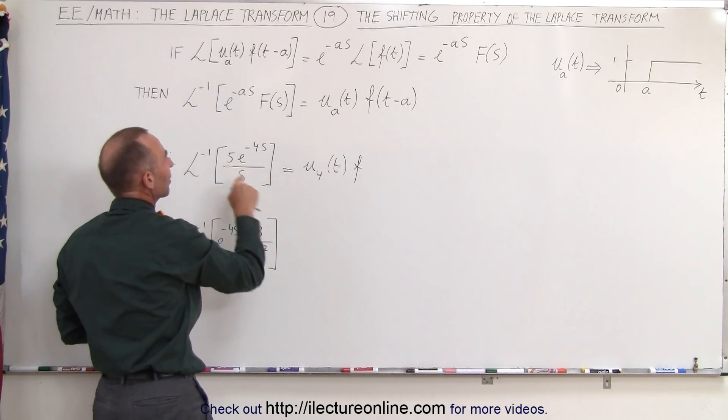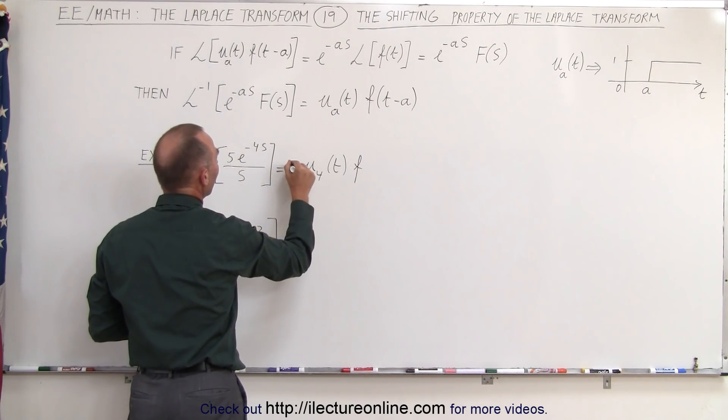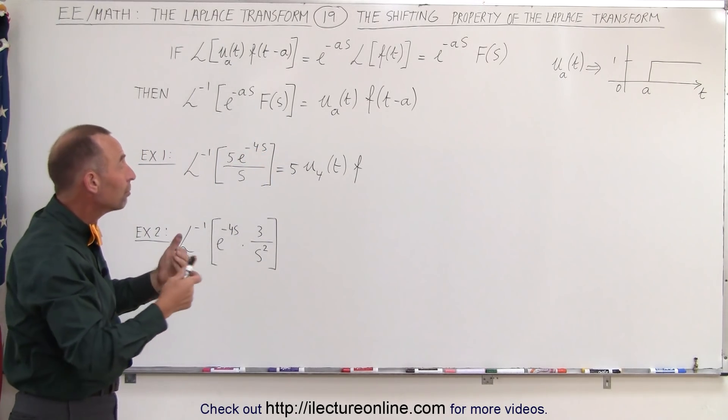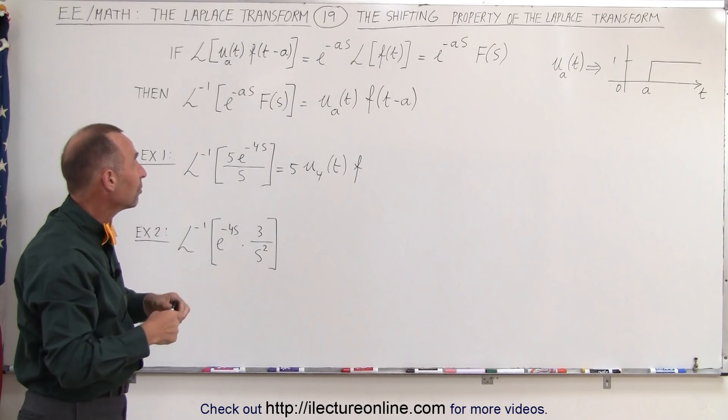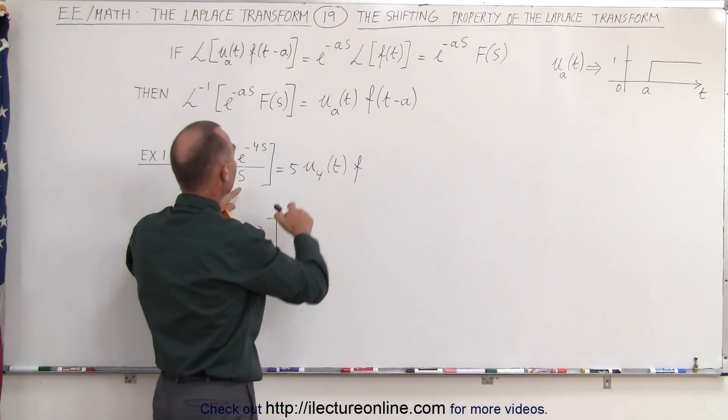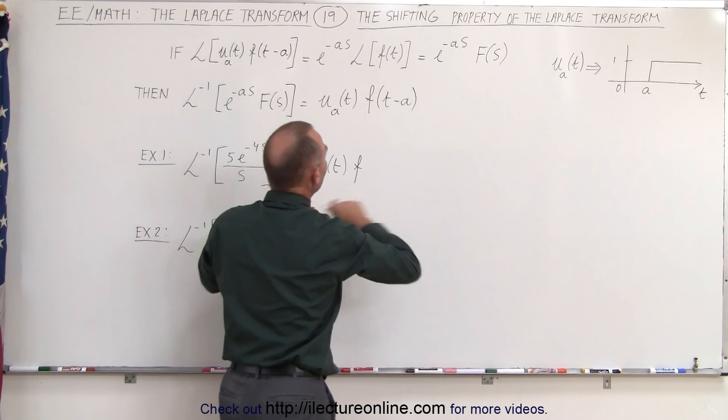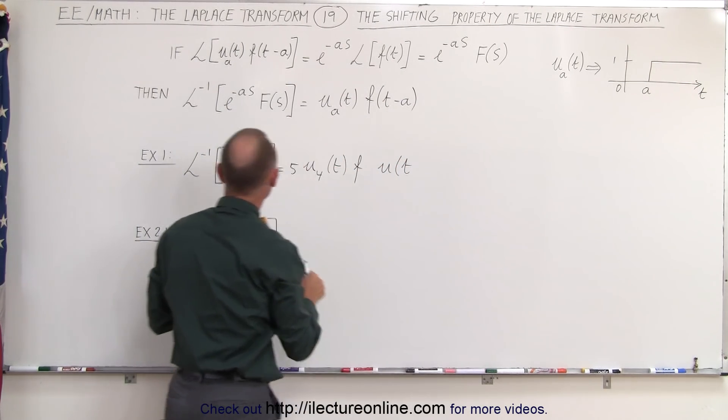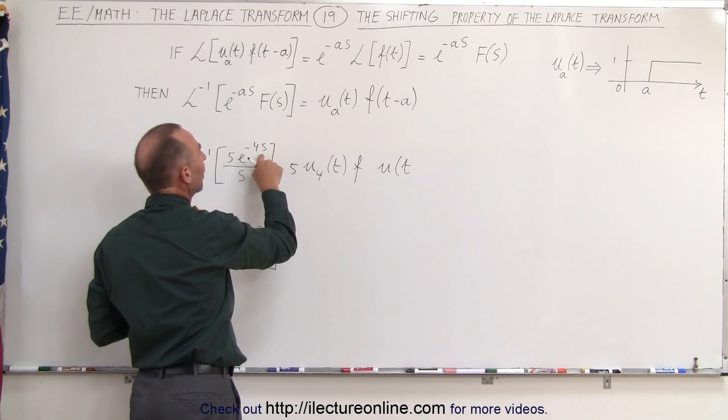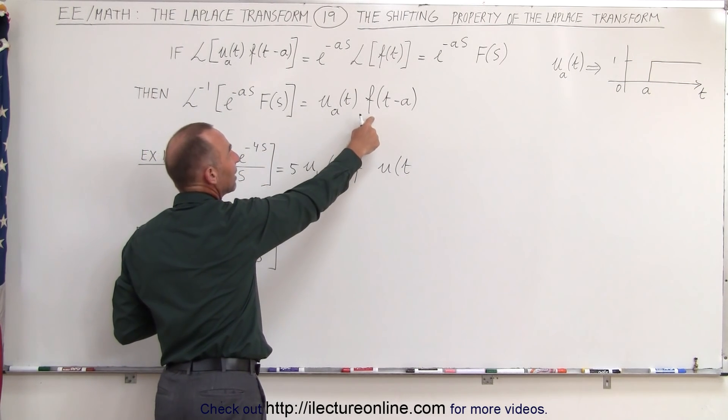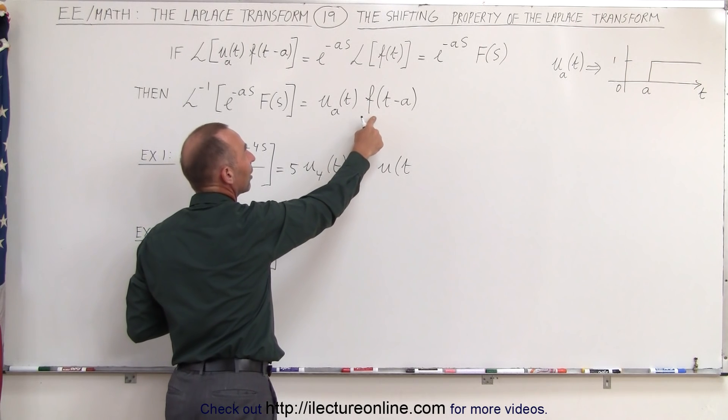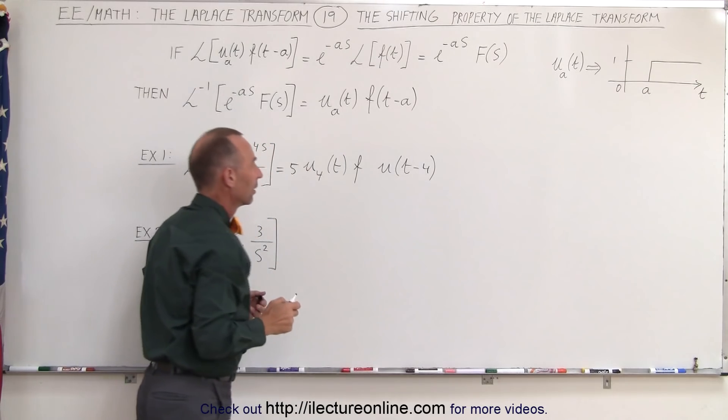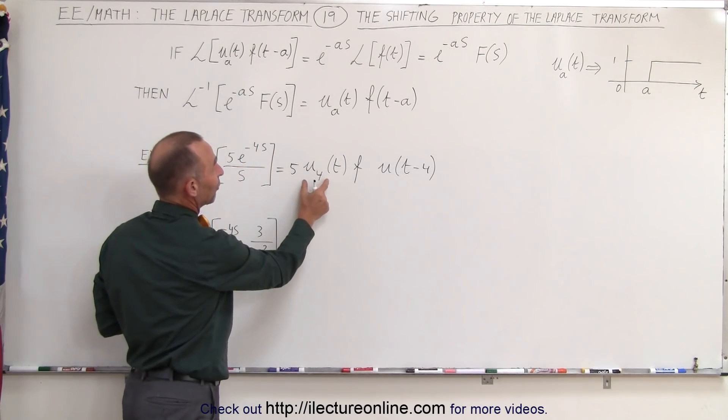Remember we have a 5 here which we can factor out, and now we have 1 over s. Now 1 over s would be the function u of t, so the inverse transform of 1 over s would simply get u of t. But since it's multiplied times e to the minus 4s, which means we really want to get the inverse transform of the function of t minus a, this would become t minus 4, which in essence is the same that we have over here.